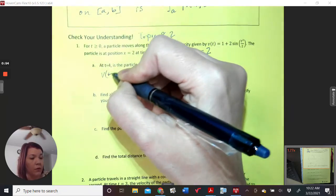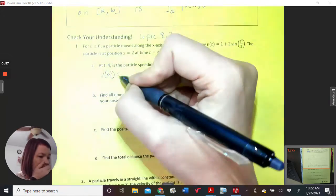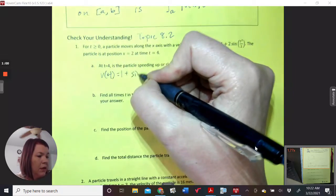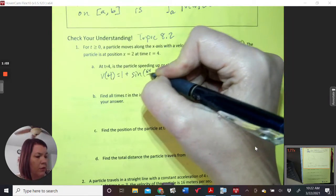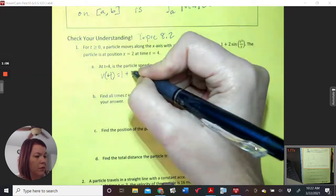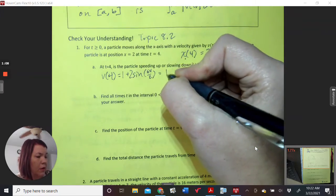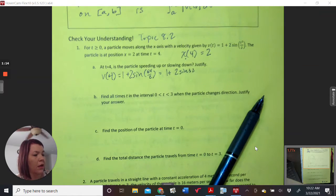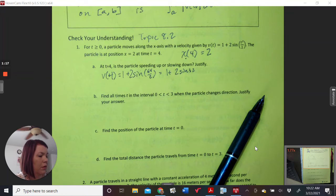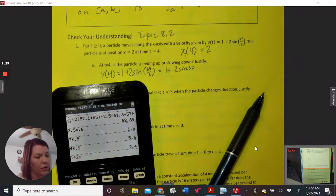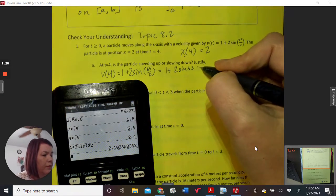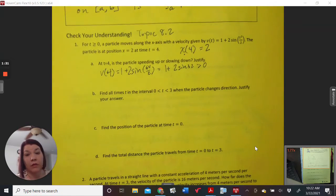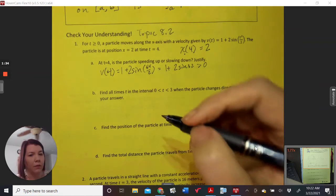So v of 4 equals 1 plus 2 sine of 64 over 2, which is 1 plus 2 times the sine of 32. And we live in radian mode. And so we've got 1 plus 2 sine 32, which is a positive number. That's all I care about, is a positive or a negative. It's too hard for me to tell. So I just use the calculator real fast.